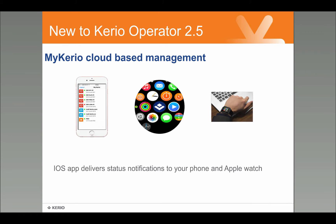It takes one username and password instead of multiple usernames and passwords. Our partners don't have to remember IP addresses — they can log in once and access all the deployments they have from Kyrio Operator and Kyrio Control. Furthermore, with MyKyrio, our partners can get notifications for things happening on the deployments they support. Notifications can be delivered to an iPhone and also to an iOS app that runs on Apple Watch. For example, if one of our partners needs to go out with family but still wants to check that everything is running okay for their customers, they can get notifications directly on their Apple Watch and give it their attention.